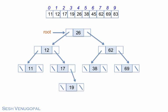Similarly, each of 38 and 69 has a right child, 45 to the right of 38 and 83 to the right of 69. This finishes up the BST.